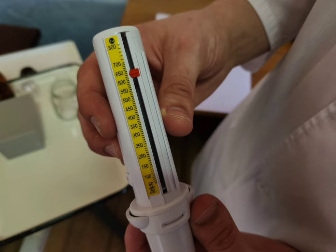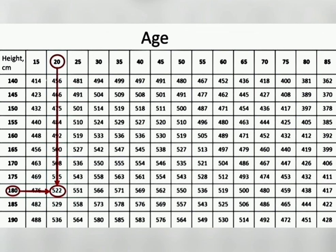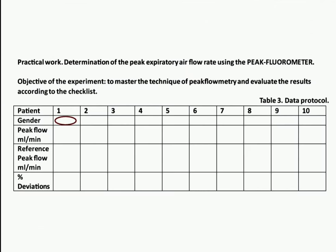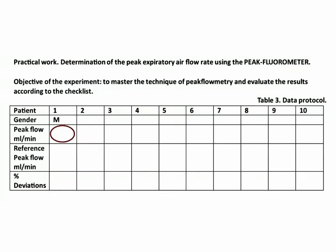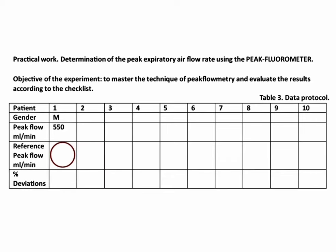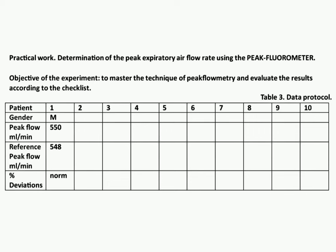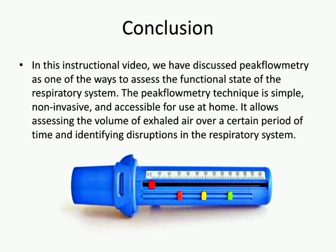The peak flowmetry result is then recorded. Select the highest result and record the correct value in the self-monitoring diary. Calculate the green zone, yellow zone, and red zone. Conclusion: Peak flowmetry is one of the ways to assess the functional state of the respiratory system. The technique is simple, non-invasive, and accessible for use at home. It allows assessing the volume of exhaled air over a certain period of time and identifying disruption in the respiratory system.